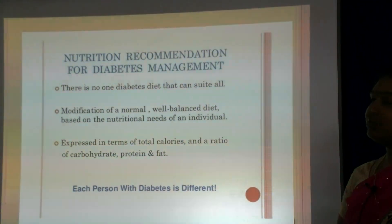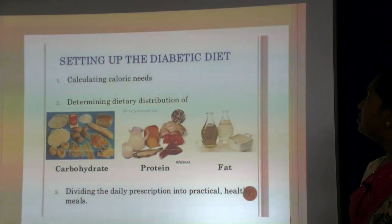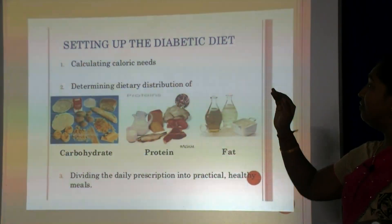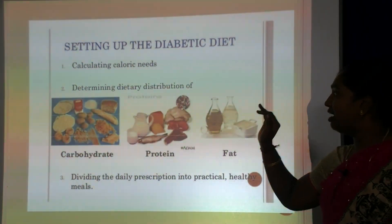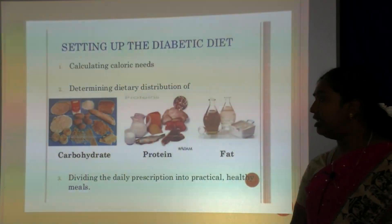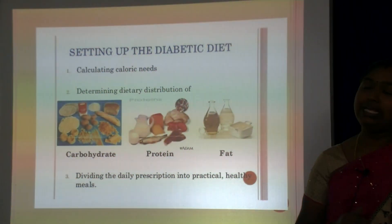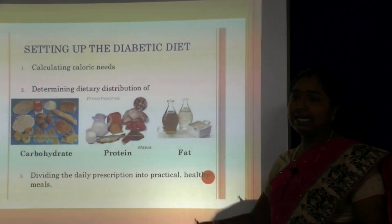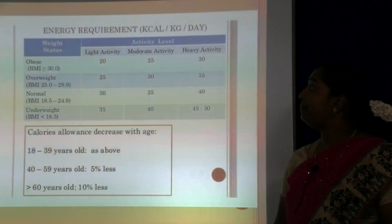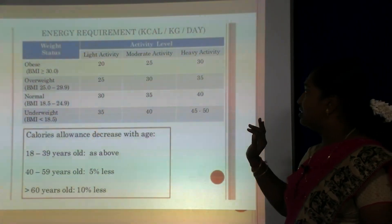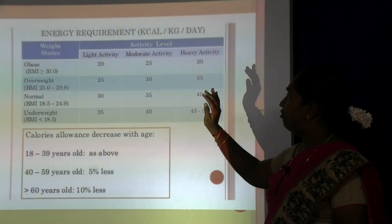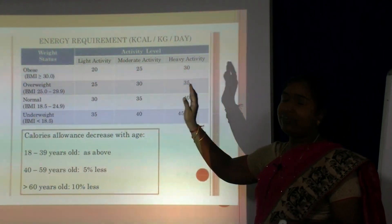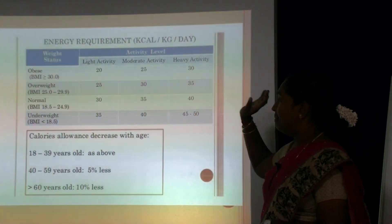Setting up a diabetic diet requires calculating the calorie requirement of an individual, determining the dietary distribution of protein, carbohydrate and fat, and dividing the daily prescription into practical and healthy meals. The energy requirement table describes requirements according to body weight per kilogram.